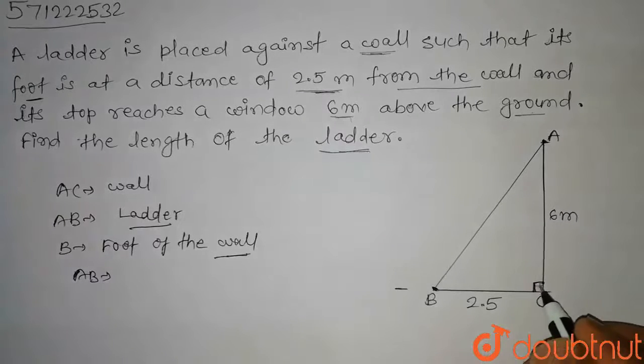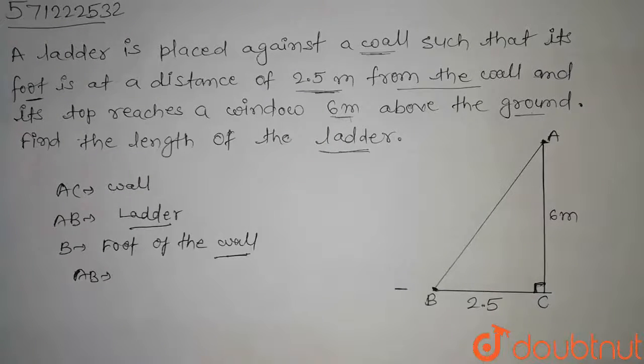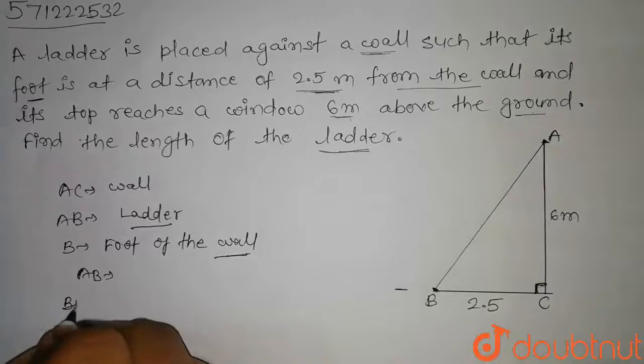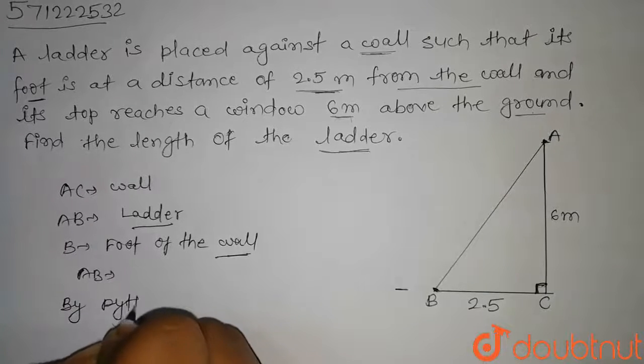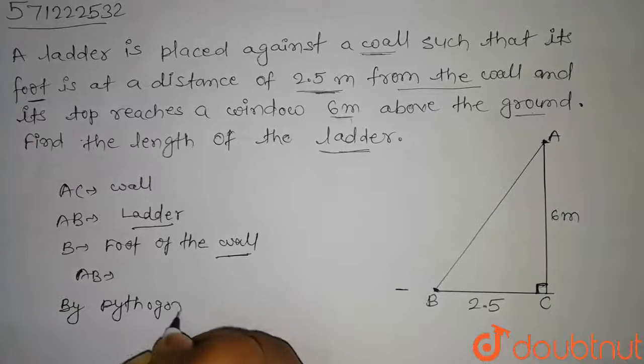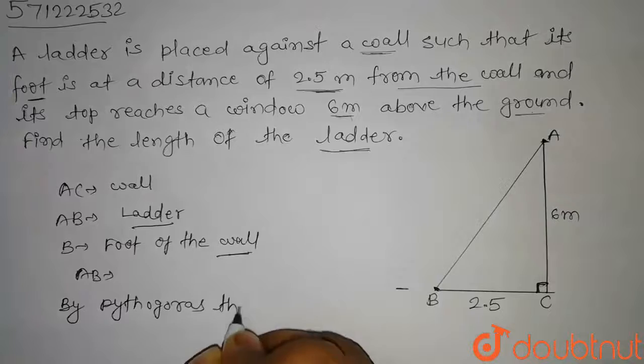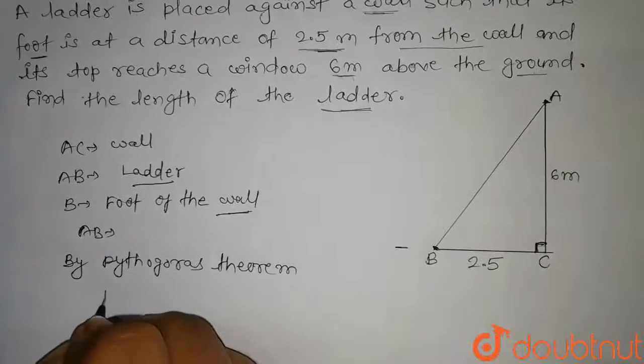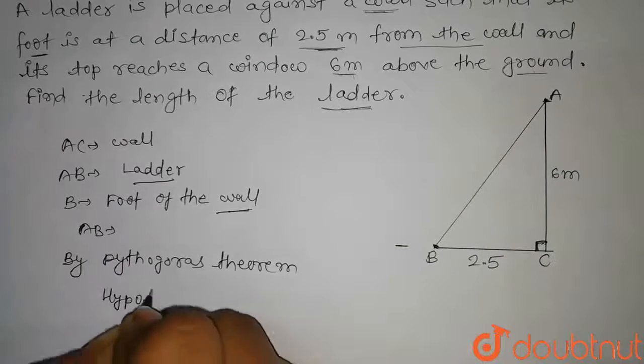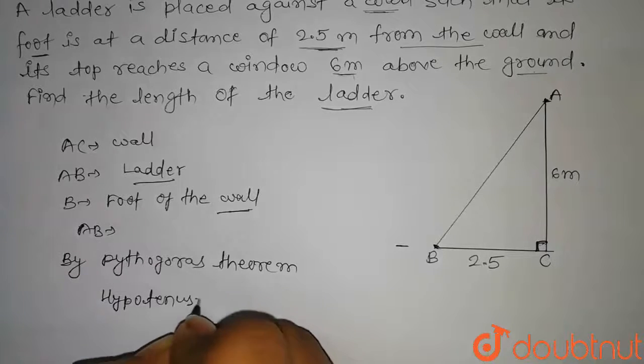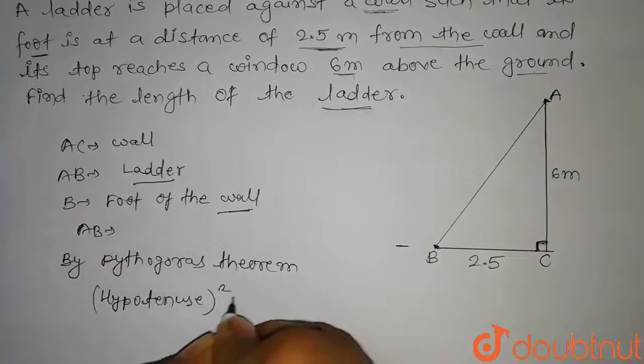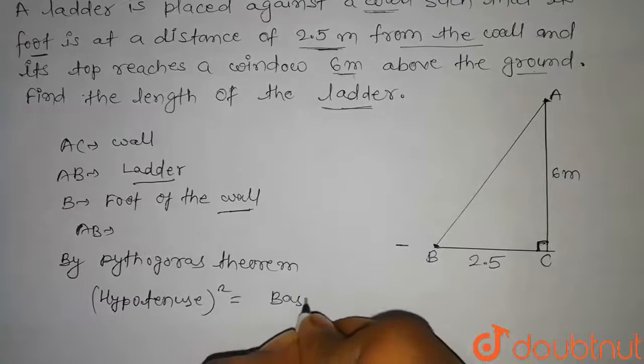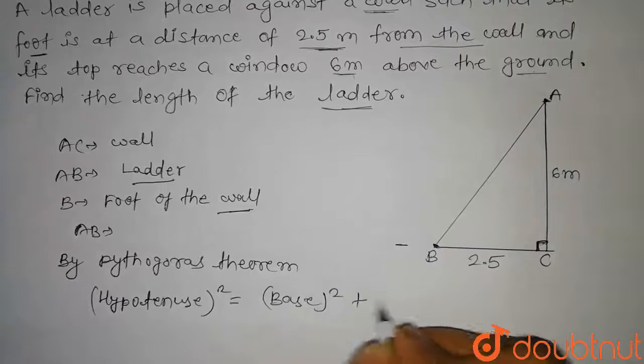We know that in a right angle triangle we can apply Pythagoras theorem. By Pythagoras theorem, hypotenuse squared equals base squared plus height squared.